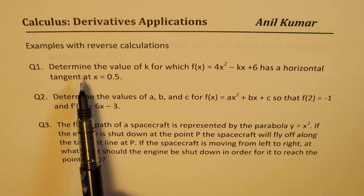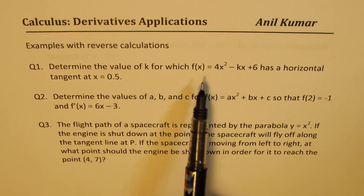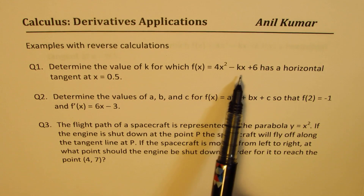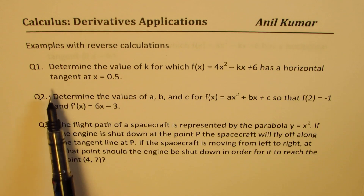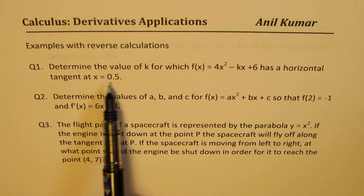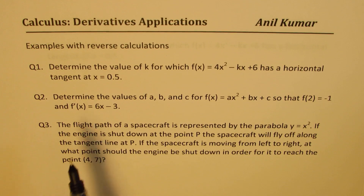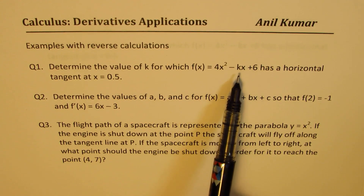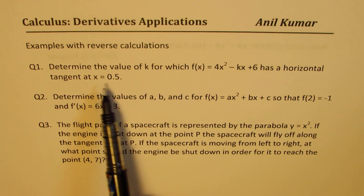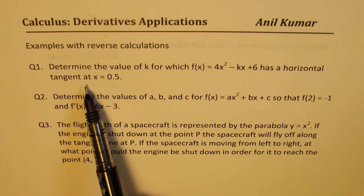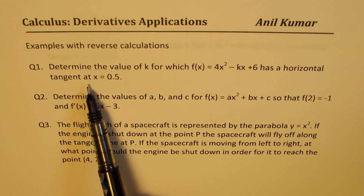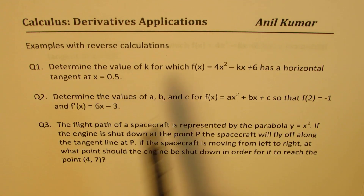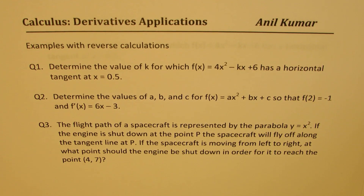Question number one: determine the value of k for which the function 4x squared minus kx plus 6 has a horizontal tangent at a given point, x equals 0.5. A horizontal tangent means the derivative value is 0 — that's a reverse calculation. You'll often see at least one question of this kind on test papers, so it is important to pay attention to it.